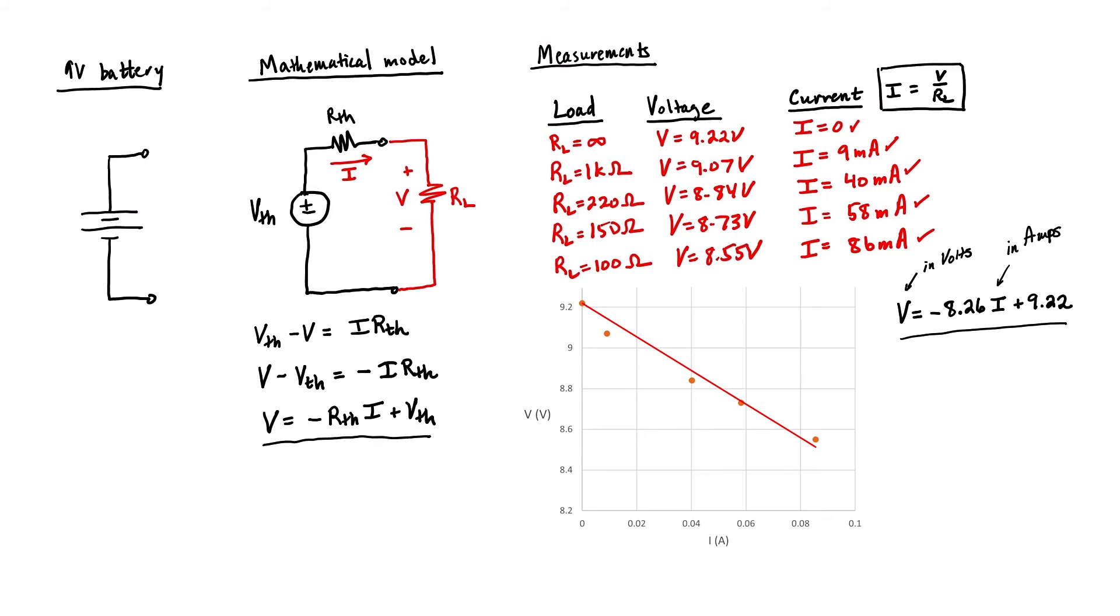Therefore, the Thevenin equivalent voltage of our 9 volt battery right here is 9.22 volts, and Thevenin equivalent resistance for this 9 volt battery is 8.26 ohms.